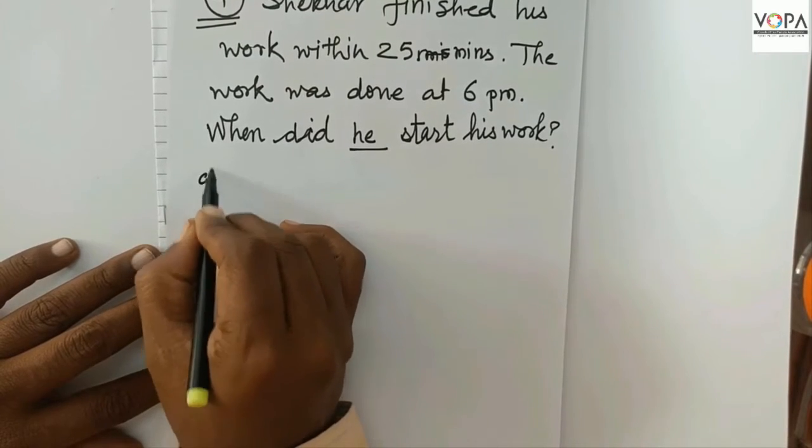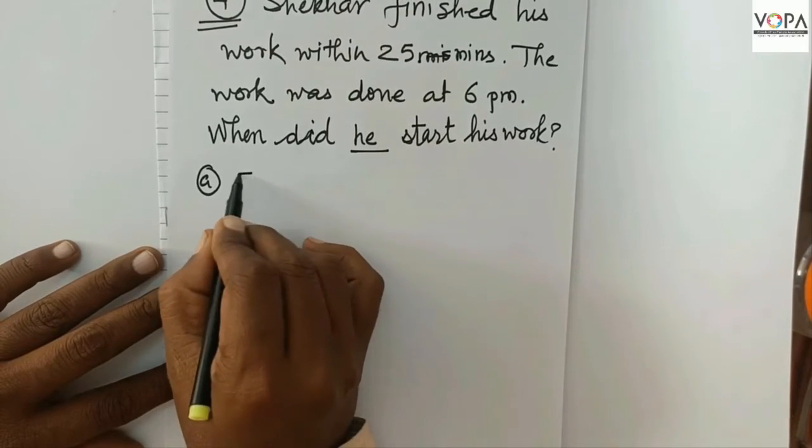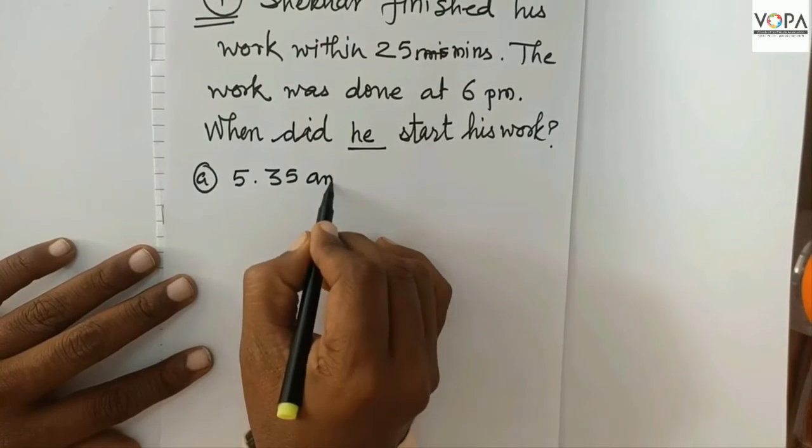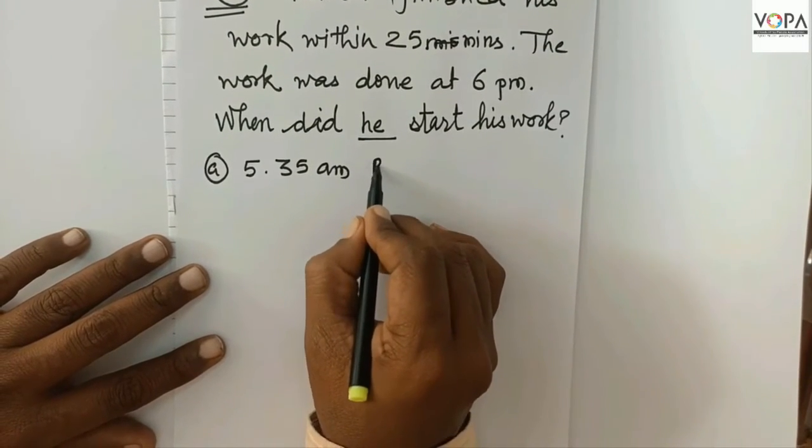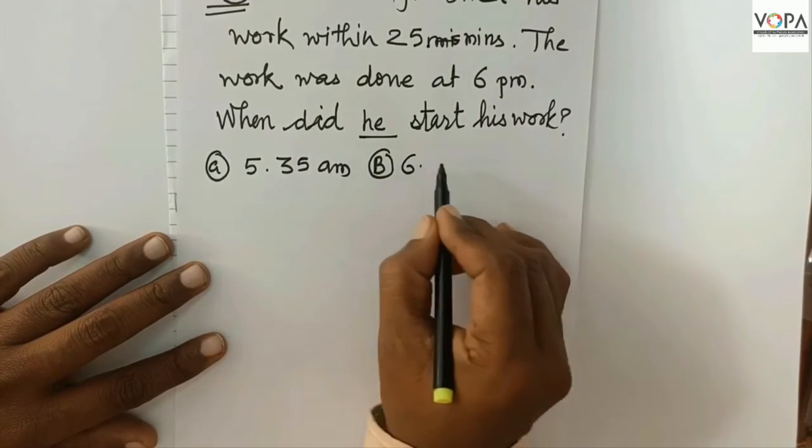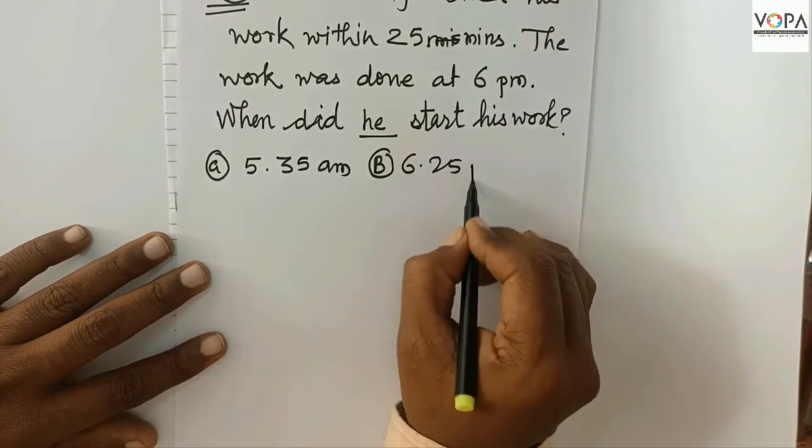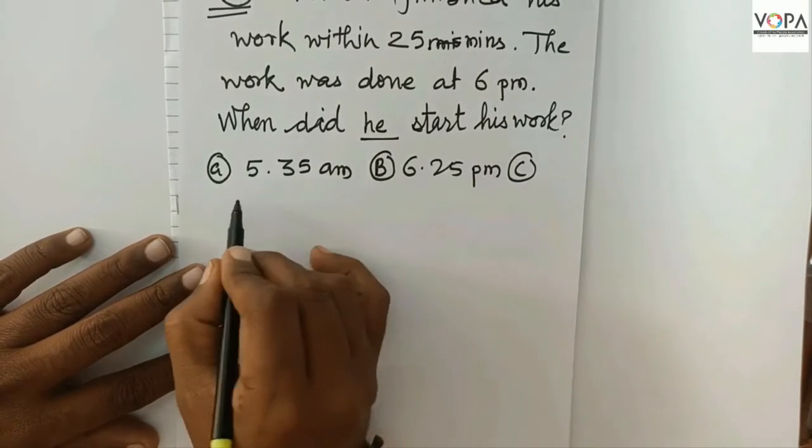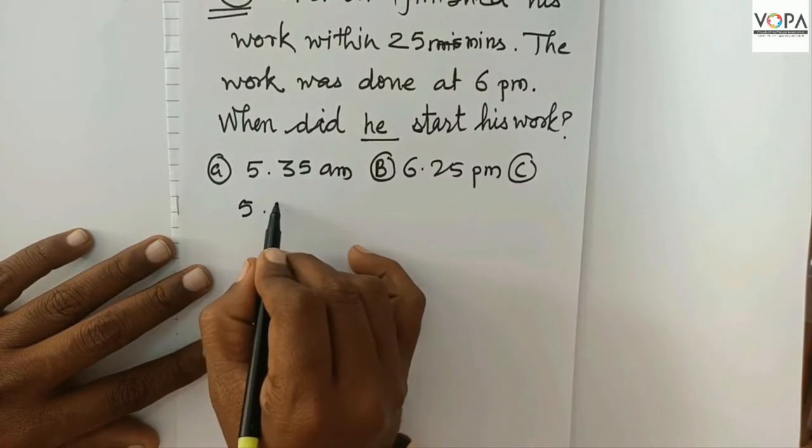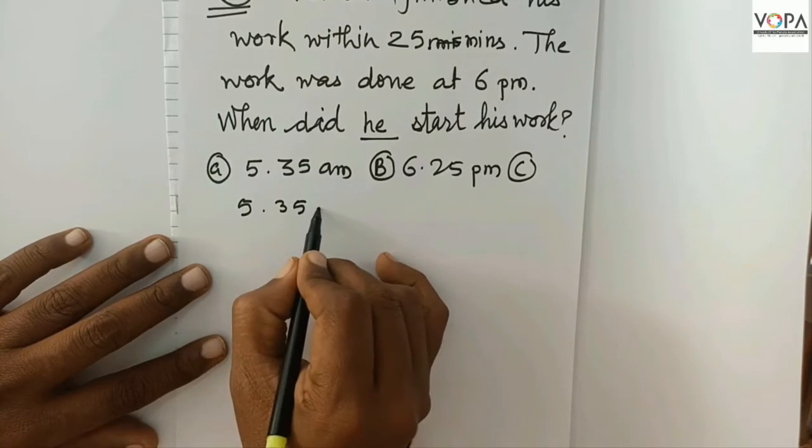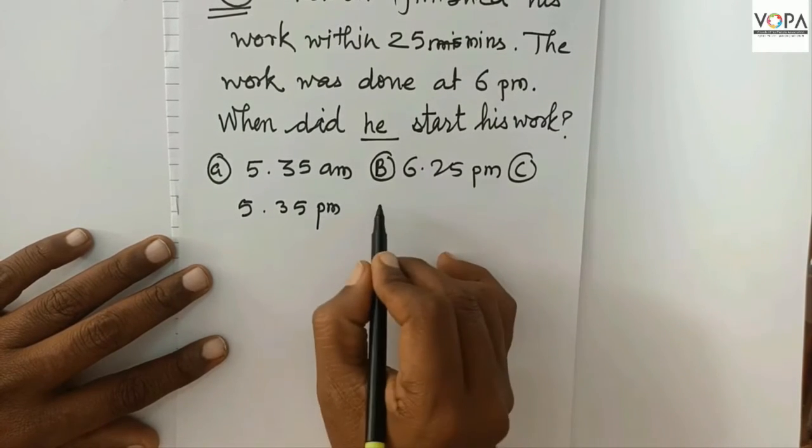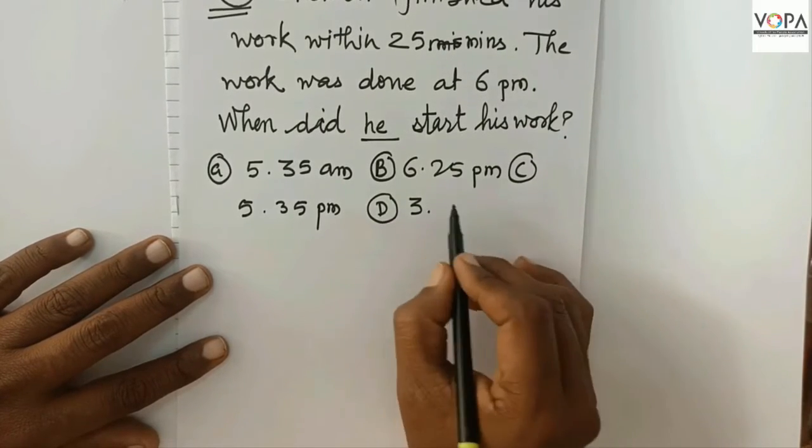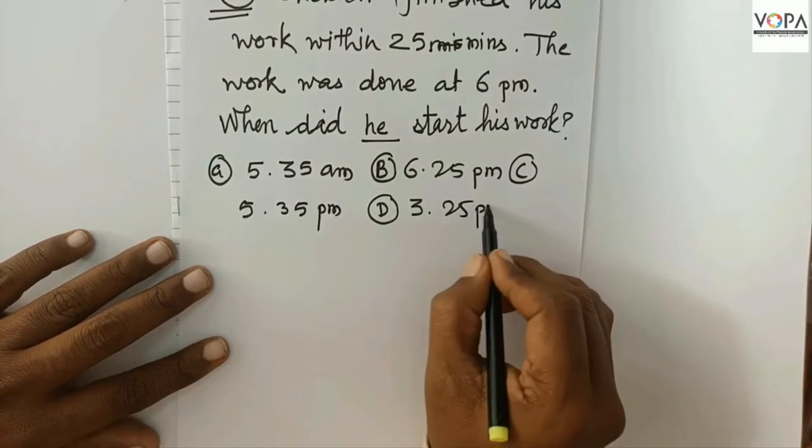Option A: 5:35 AM. B: 6:25 PM. C: 5:35 PM. And D: 3:25 PM.